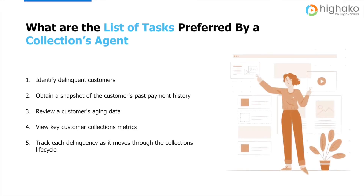Now that we've understood what a Collector's Work Queue is and what the use of it is, let's discuss what is the list of tasks performed by a collections agent. As a collection agent, you need to perform a list of specific tasks to recover debts. These tasks are identifying delinquent customers, obtaining a snapshot of the customer's past payment history, reviewing a customer's aging data, viewing the key customer's collection metrics, and tracking each delinquency as it moves through the collection's lifecycle.